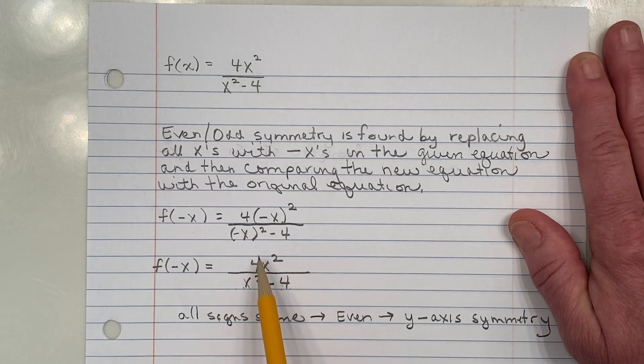And if neither of those cases were met where all the signs were the same or all the signs were different, then we wouldn't have any even or odd function. We would have no symmetry.